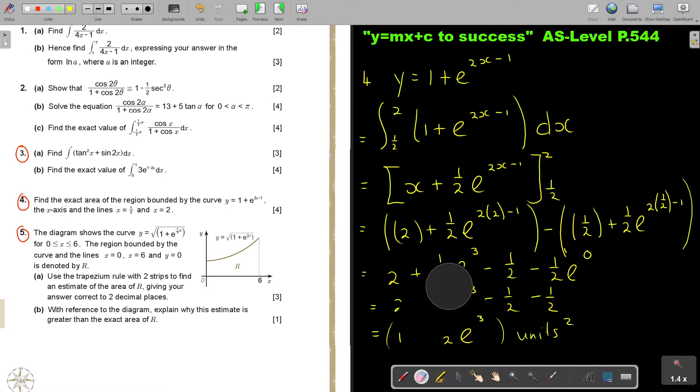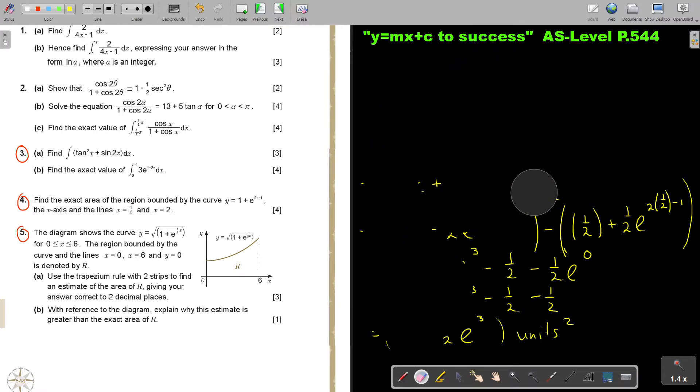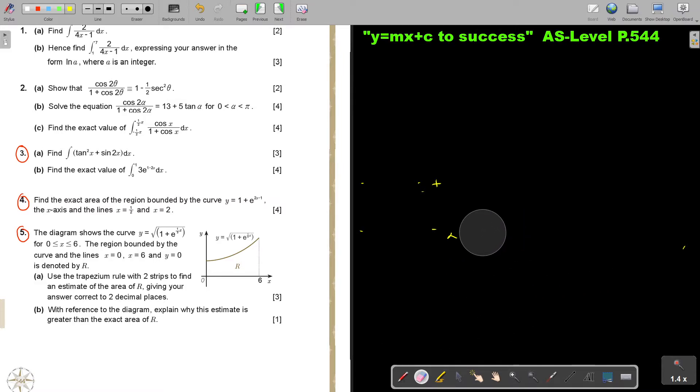And that was number 4. And now we can go for the last one, number 5. Let's start. Number 5. The diagram shows the curve. Now, I always like first writing that down. Y is equal, and it's a root, and it's going to be 1 plus E to the power of 1 over 3. It's just a bit small, but I think you can see it in the textbook. 1 over 3, X. And then they also say that X is bigger and equal to 0, and smaller and equal to 6, which you can also see from the graph.